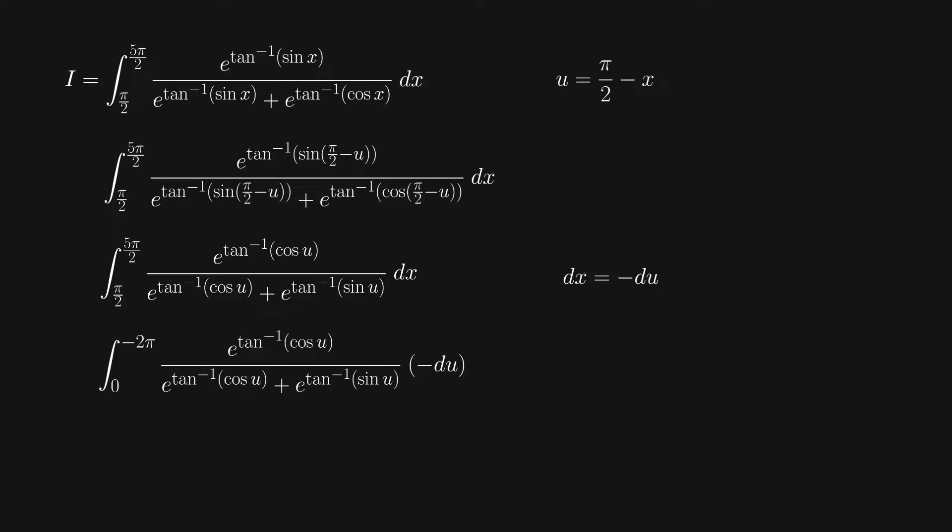Also, after doing the substitution, our bounds have changed. We're now integrating from 0 to negative 2π. Although the bounds are backwards, this is actually useful because we can use the negative sign to switch over our two bounds. Luckily, our function has a period of 2π, so we can legitimately change the bounds of our integral from negative 2π to 0 to π/2 to 5π/2.